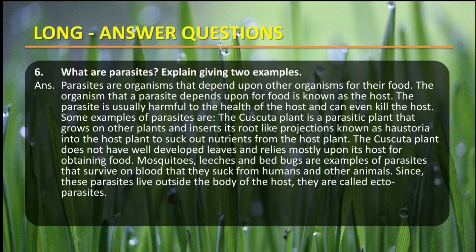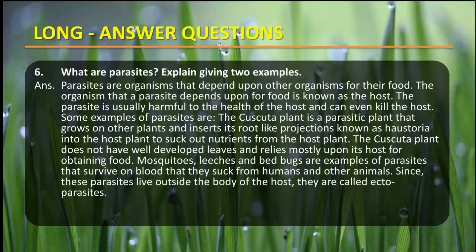The cuscutta plant does not have well-developed leaves and relies mostly upon its host for obtaining food. Other examples are mosquitoes, leeches, and bed bugs — parasites that survive on the blood they suck from human beings and other animals. Since these parasites live outside the body of the host, they are called ectoparasites. In short, parasites depend upon other organisms and take nutrients from the host, whether living inside or outside the host's body.